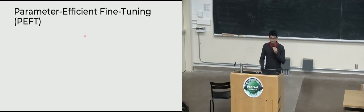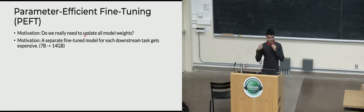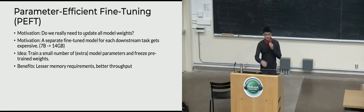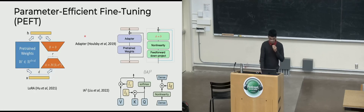Parameter-efficient fine-tuning: the motivation is that you don't always need to update all the model weights. In a corporate setting, you're fine-tuning for multiple tasks and running multiple sets of experiments — it's expensive to maintain a full copy of all model weights. PEFT methods let you train just a small number of extra parameters while freezing the pre-trained weights. Benefits are lesser memory requirements and better throughput. The trade-off is a small performance hit, and sometimes inference latency.